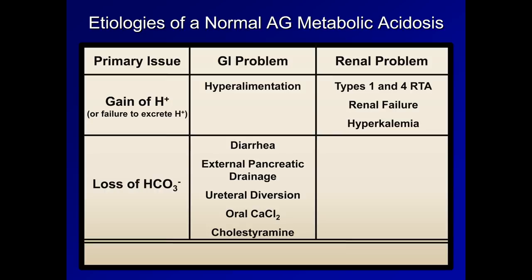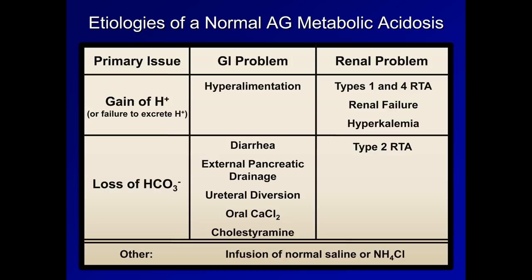Cholestyramine is an anion-exchange resin meant to exchange chloride with bile salts and thus aid in their elimination. However, bicarbonate can also bind to cholestyramine, leading to a metabolic acidosis, though this rare side effect is seen predominantly in patients with baseline renal insufficiency. Loss of bicarbonate in the kidneys is really only caused by type 2 renal tubular acidosis. Two additional etiologies that don't clearly fall into the above scheme are infusions of either normal saline or ammonium chloride. Ammonium chloride is a rarely used medication indicated only for the treatment of metabolic alkalosis.